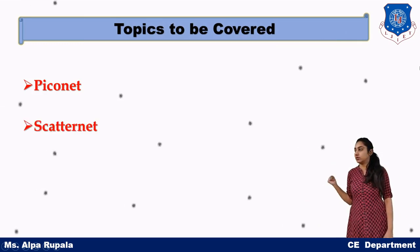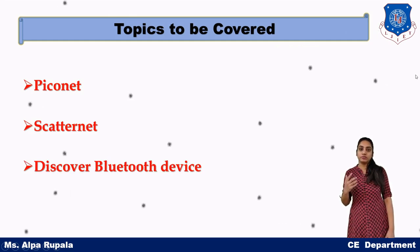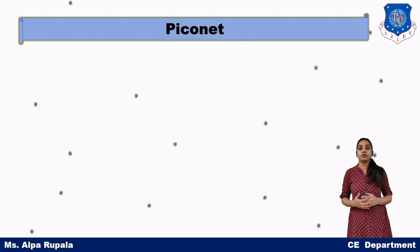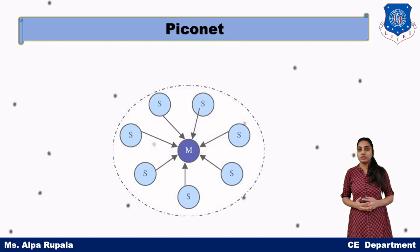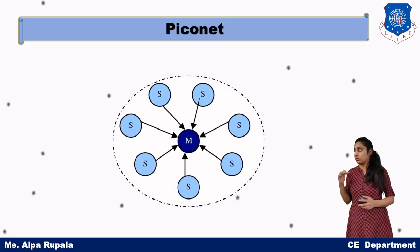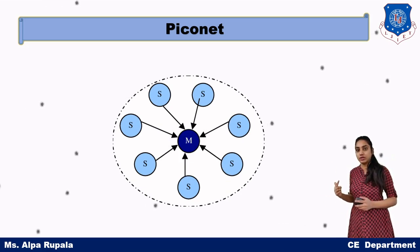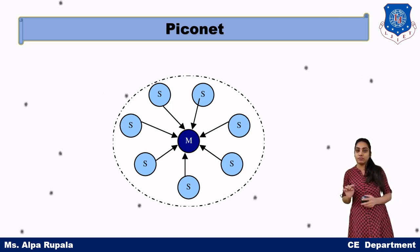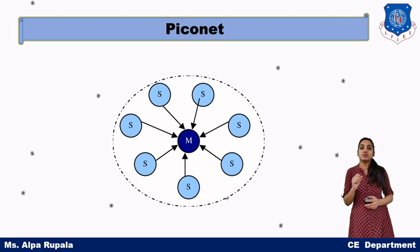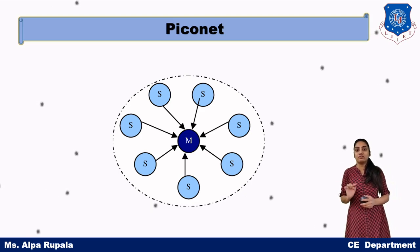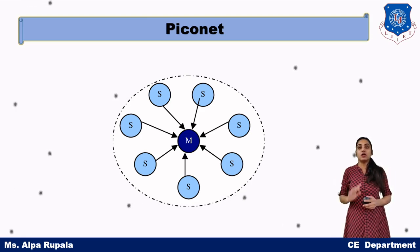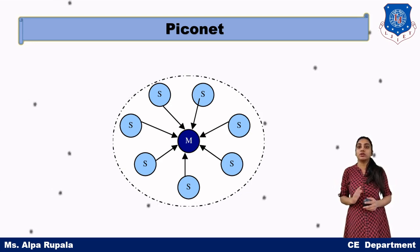Topics to be covered today: first, what is Piconet; then, what is Scatternet; and then discovery of Bluetooth devices. A Piconet is nothing but a collection of different Bluetooth devices for communication purposes. As we can see in the diagram, this whole network connection of devices is what a Piconet is. The circle identifies the devices — we have a total of 8 devices, one named capital M and the others named capital S. The M device is the master device and all S devices are slave devices, giving us one master and seven slaves in our Piconet, and all are Bluetooth-enabled devices.